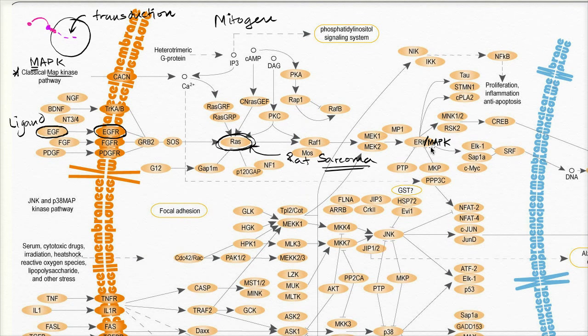Right over here you actually see the MAP kinase. It's often called, or was originally called, ERK, which is extracellular signal-regulated kinase. This is an incredibly important pathway to cancer researchers, and they actively are looking for different types of drugs and molecules that can down-regulate this type of pathway.